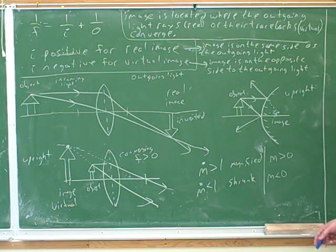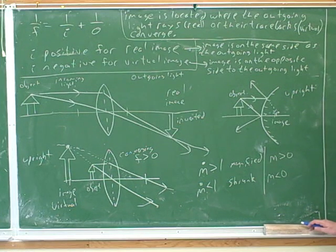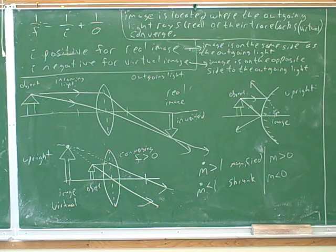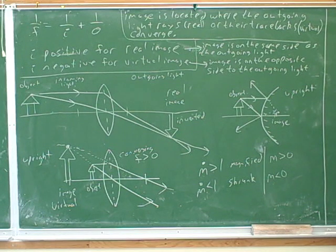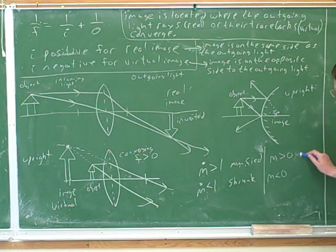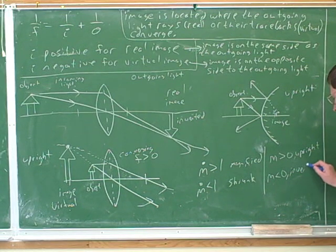What would be intuitive? If something is upright, does it seem intuitive for that to have a positive m or a negative m? It seems like it would go with an upright image. Upright is a positive-sounding word, and conveniently that's the convention that was chosen. So an m greater than zero indicates an upright image, and an m less than zero indicates an inverted image.